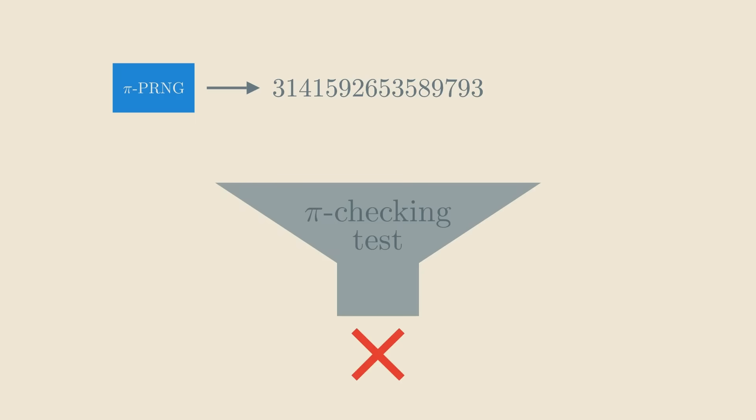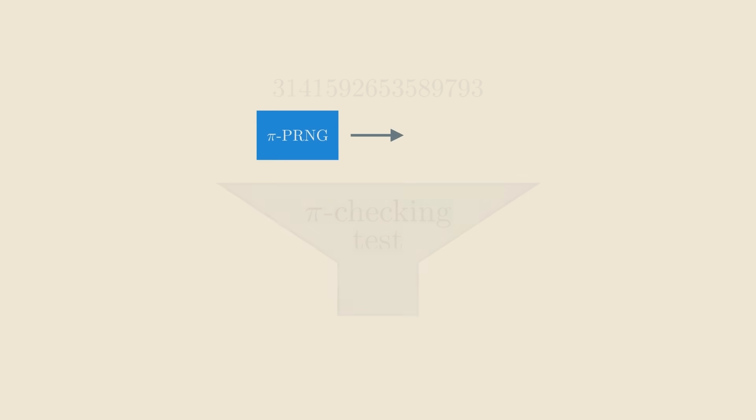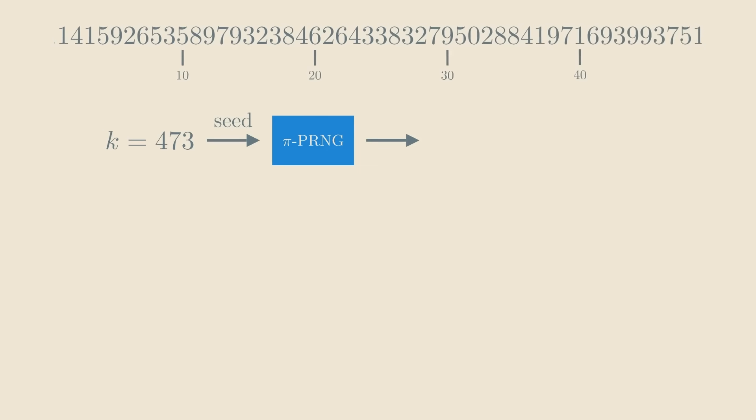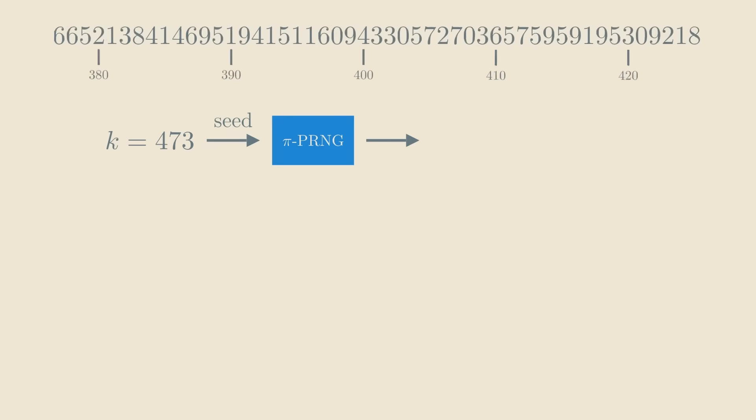The issue is that our pi-based generator isn't using the random seed, so let's upgrade it. The new version of our generator first looks at the random seed and interprets it as a random number k. Then, it computes the digits of pi until it reaches position k. Finally, it reads the next n digits and returns those.